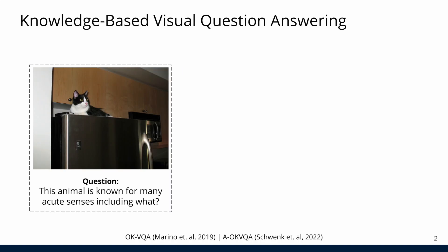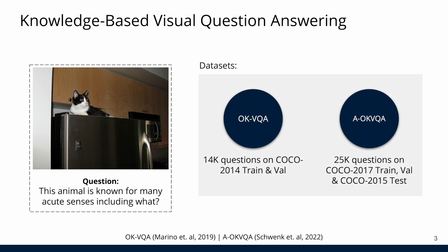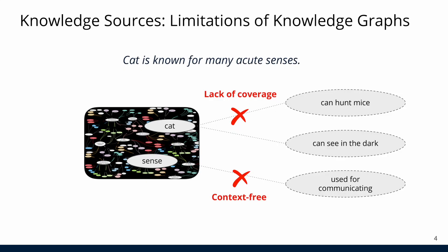Visual question answering with external common sense knowledge is a new challenging area of VQA, where models need outside world knowledge to answer questions. Two popular datasets in this area are OKVQA and AOKVQA, both proposed by Allen AI. Many existing works focus on obtaining knowledge from static knowledge bases like ConceptNet. This has two issues.